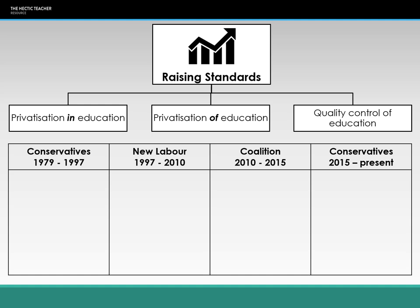We start with the Conservatives from 1979 to 1997 — Margaret Thatcher and John Major. They introduced one of the biggest education policies in our history: the Education Reform Act of 1988. This had a huge impact on the education system and introduced a number of policies and changes to what teachers were doing in the classroom.